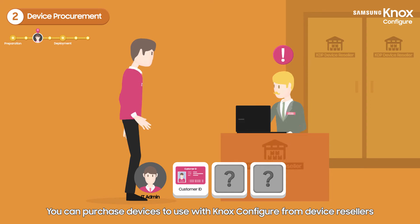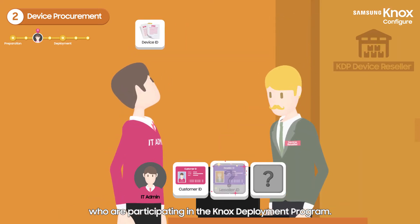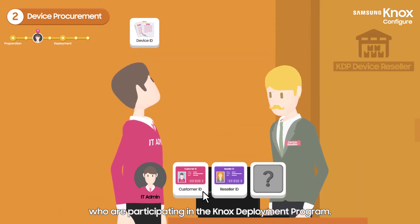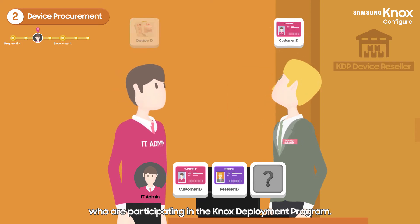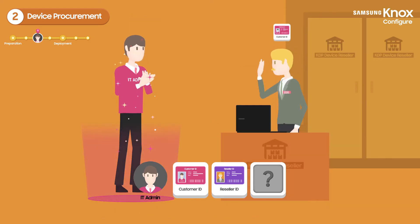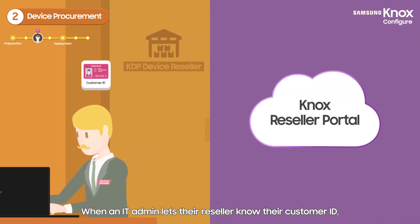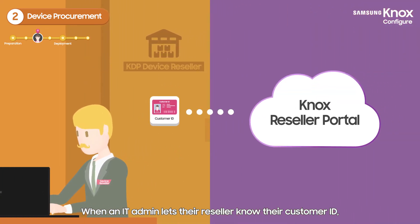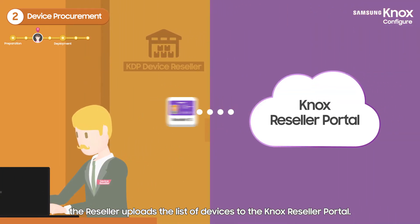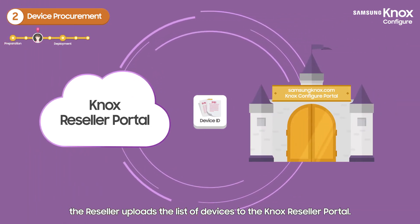You can purchase devices to use with Knox Configure from device resellers who are participating in the Knox Deployment Program. When an IT admin lets their reseller know their customer ID, the reseller uploads the list of devices to the Knox Reseller portal.